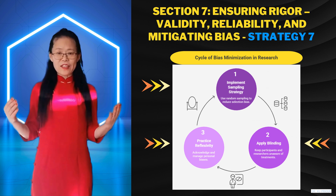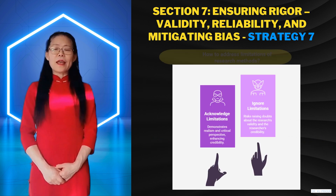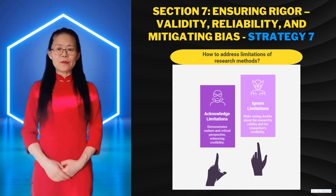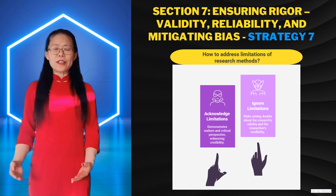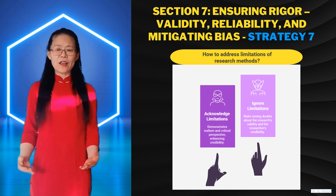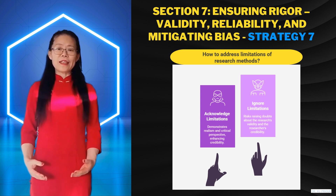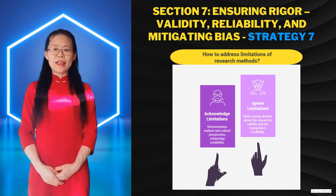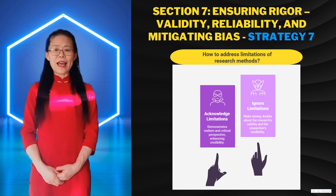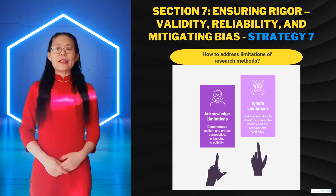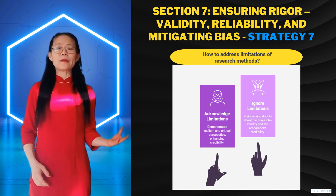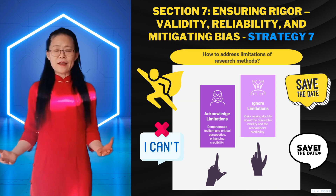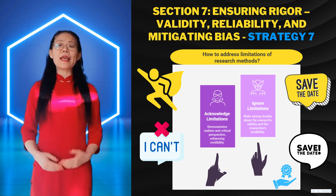It's also critically important to discuss how you minimize potential bias. This could involve your sampling strategy — like random sampling to reduce selection bias — using blinding in experiments where participants or researchers don't know who received what treatment, or practicing reflexivity in qualitative research, which means acknowledging your own potential biases and how you actively manage them. Finally, don't shy away from acknowledging the limitations of your chosen methods. No method is perfect, and proactively addressing limitations actually demonstrates a realistic and critical perspective on your research design. Explain why these limitations don't entirely undermine your findings, and suggest how future research could address them.